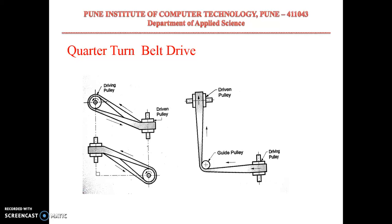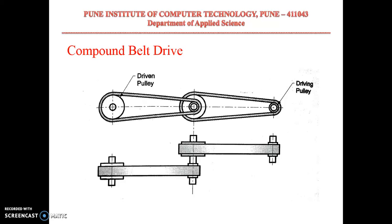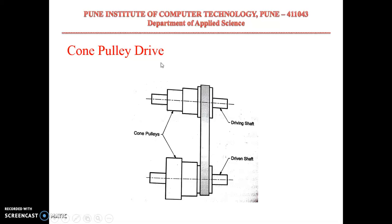A quarter turn belt drive is used when two shafts are perpendicular to each other. In this case, the width of the belt will be large in order to prevent the belt from leaving the pulley, as it runs in a crossed manner. A compound belt drive is used when power is transmitted from one shaft to another through a number of intermediate pulleys. Here we have a driving pulley, intermediate pulleys, and a final driven pulley — such an arrangement is called a compound belt drive.